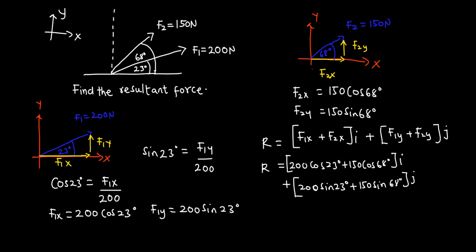Now let's simplify. The x component: 200 cosine of 23 degrees plus 150 cosine of 68 degrees gives a value of 240.2. The y component: 200 sine of 23 degrees plus 150 sine of 68 degrees gives 217.2. So the resultant force in component form is 240.2i + 217.2j.